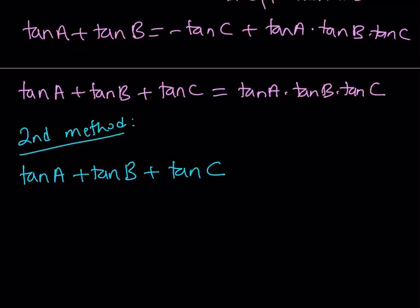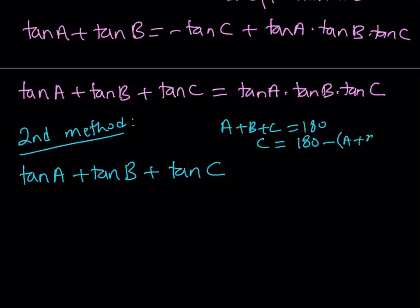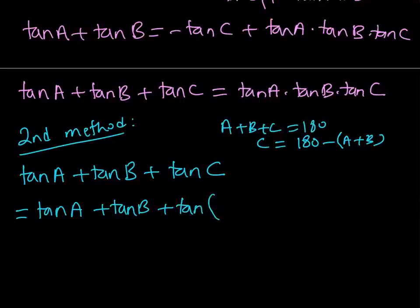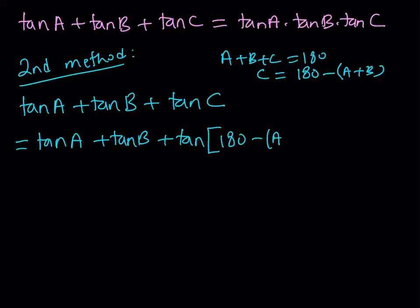Since A plus B plus C is 180 degrees, I can isolate C and write it as 180 minus the quantity A plus B. So instead of writing tangent C, I can turn this into tangent A plus tangent B plus tangent of (180 minus the quantity A plus B), which is equivalent to tangent C.